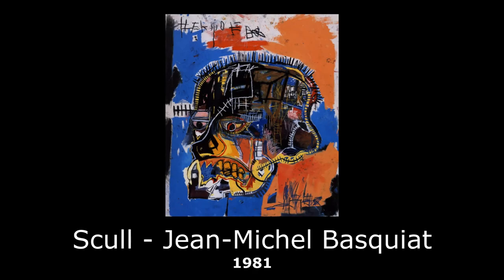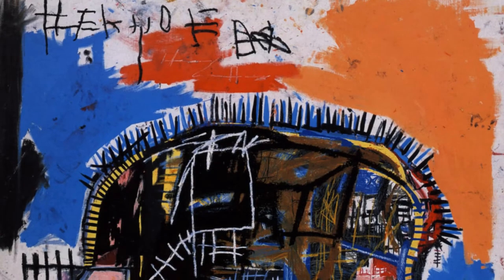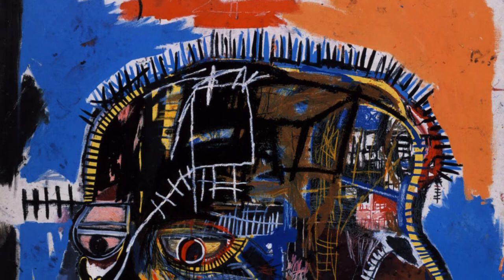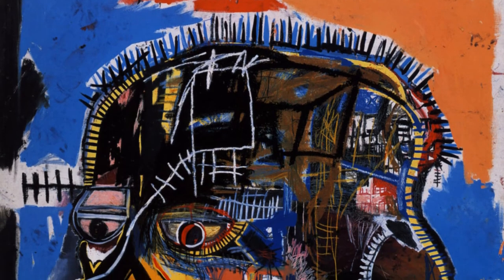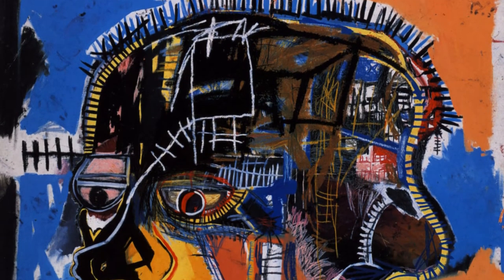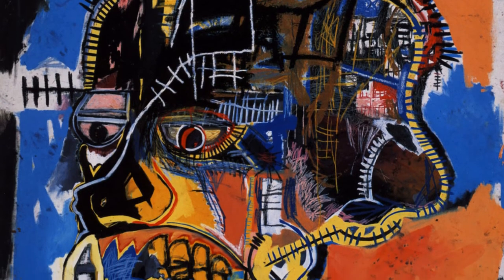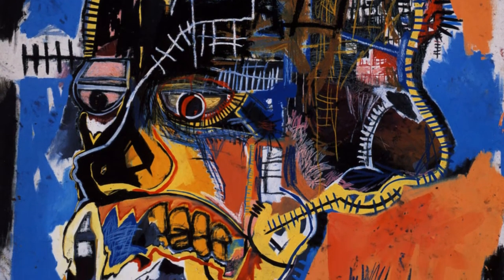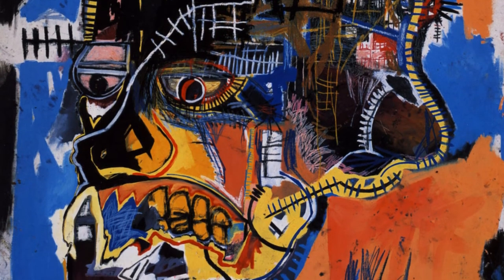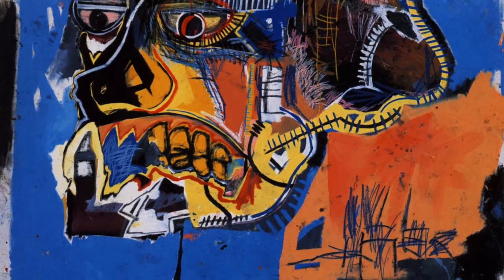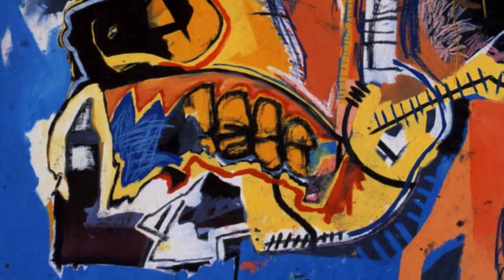Skull — Jean-Michel Basquiat. Basquiat was a precocious child, and at the age of seven his mother gave him a copy of Gray's Anatomy, which he later used as a reference to create his masterful and deconstructed figures. In this painting,